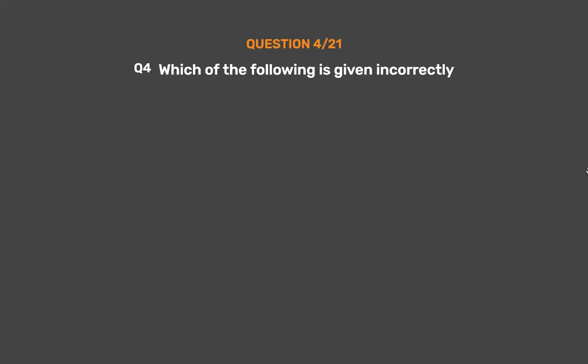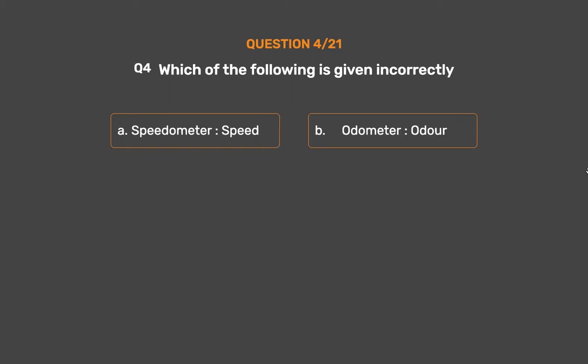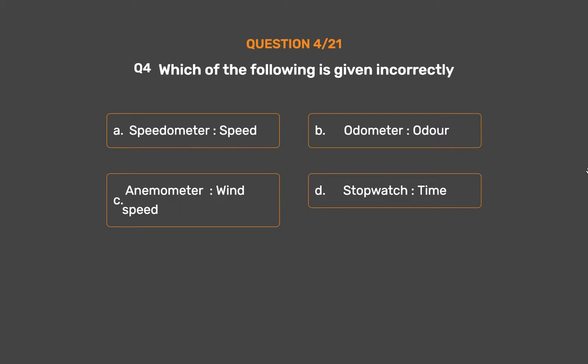Question No. 4. Which of the following is given incorrectly? Option A: Speedometer — Speed. Option B: Odometer — Order. Option C: Anemometer — Wind speed. Option D: Stopwatch — Time.